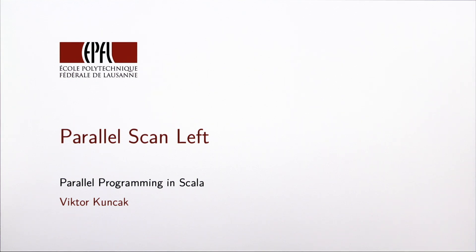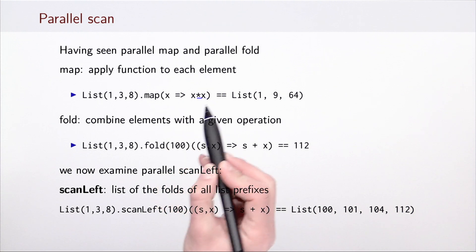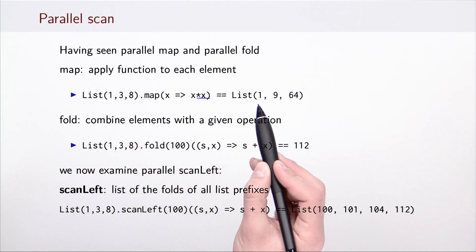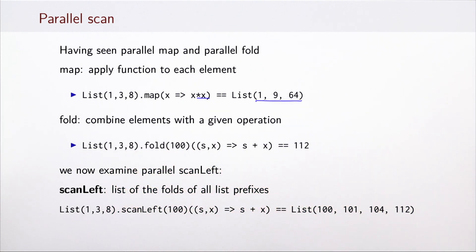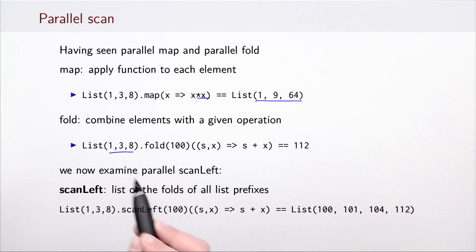Now we look at parallel scan operations on collections of elements. We have seen several operations on collections and how to implement them in parallel so far. We have seen map, which applies a given function to each element of the list producing a new list of the same length. We have seen fold and its variant reduce, which takes a list of elements and combines all the elements with a given operation. And now we consider scan.